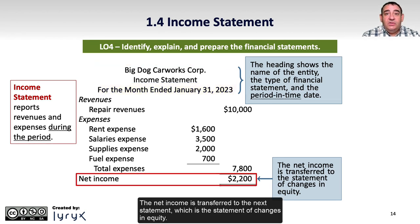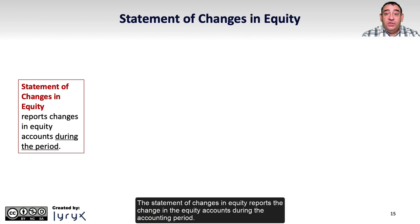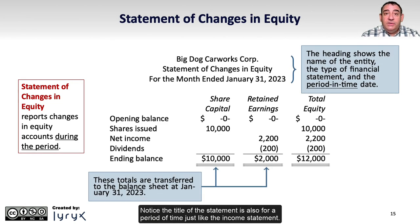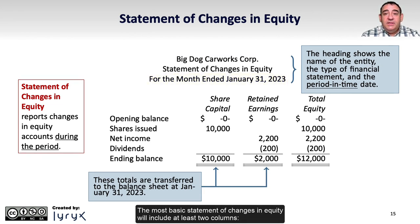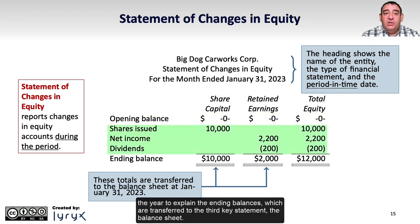The net income is transferred to the next statement, which is the statement of changes in equity. The statement of changes in equity reports the change in the equity accounts during the accounting period. Notice the title of the statement is also for a period of time, just like the income statement. The most basic version will include at least two columns — one for share capital and one for retained earnings — showing opening balances and changes during the year to explain the ending balances, which are transferred to the third key statement, the balance sheet.